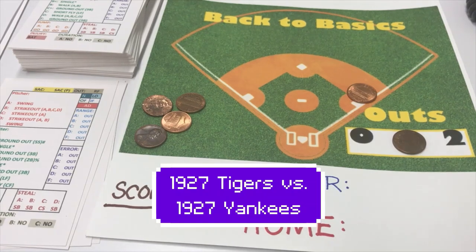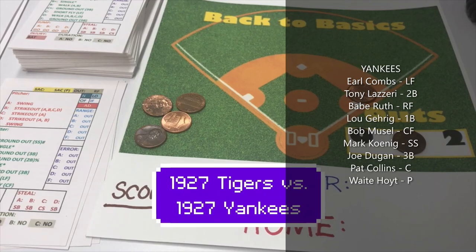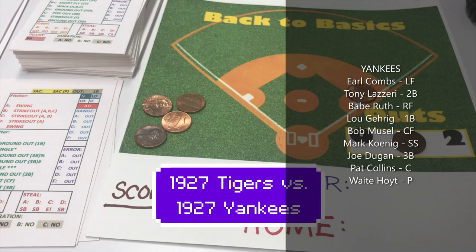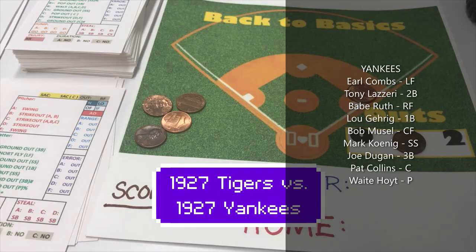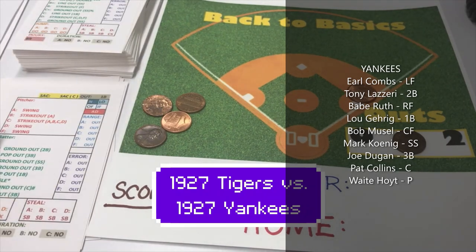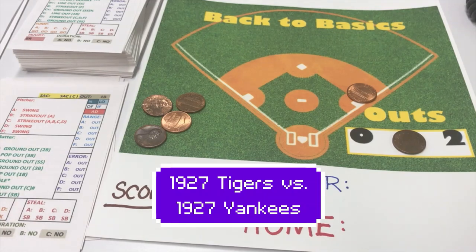We go to the bottom of the first. Earl Combs is up for the Yankees against a C pitcher — he's an F, so we go to the out section: ground out to first, three. Tony Lazeri is next — C pitcher, he isn't a strikeout type, fly out to right field, F9. Babe Ruth is up against the C pitcher — he's an F, so we go to the batter section. Ruth is an A-plus batter and gets a ground out to second base, four to three. The Yankees go one-two-three, Whitehill shutting them down.